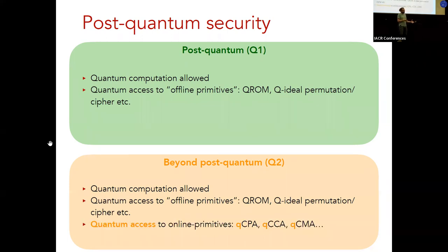Now they start to differ. And that's basically because of two different approaches in the Q2 model. The approach is, okay, how strong of a security model can we imagine? And of course, the strongest thing is to allow quantum access to everything where we still have non-trivial security possible. And this, for example, includes quantum access to online primitives. So for example, we would then allow quantum chosen plaintext attacks and quantum chosen ciphertext attacks, quantum chosen message attacks, et cetera.